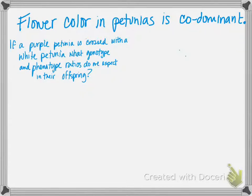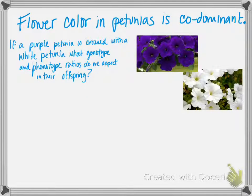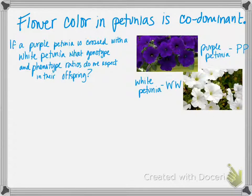You've probably seen petunias — they're pretty common in flower beds and hanging baskets. So what if we took a purple petunia and crossed it with a white petunia? What genotype and phenotype ratios would we expect to see in the offspring? First, let's make sure we know the genotypes of the parents. The purple petunia would be capital P, capital P, and the white petunia would be capital W, capital W. We know that because since flower color is codominant, in order for a flower to appear a single color, it has to be homozygous for that color.